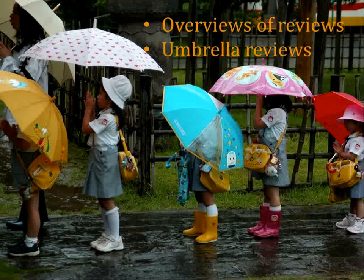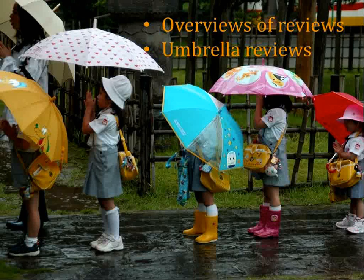We started doing overviews of reviews back in 2006. At that time, the Cochrane Collaboration referred to these as umbrella reviews, largely because they were broad in scope and brought together a number of different systematic reviews on a topic. We started doing them because one of our key deliverables for the Cochrane Child Health Field is knowledge translation. We started a journal back in 2006 called Evidence-Based Child Health, a Cochrane Review Journal, and in each issue we developed and published an overview of reviews.